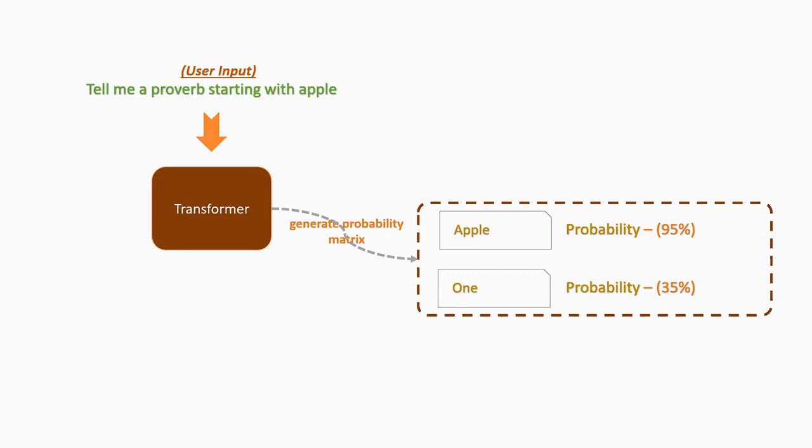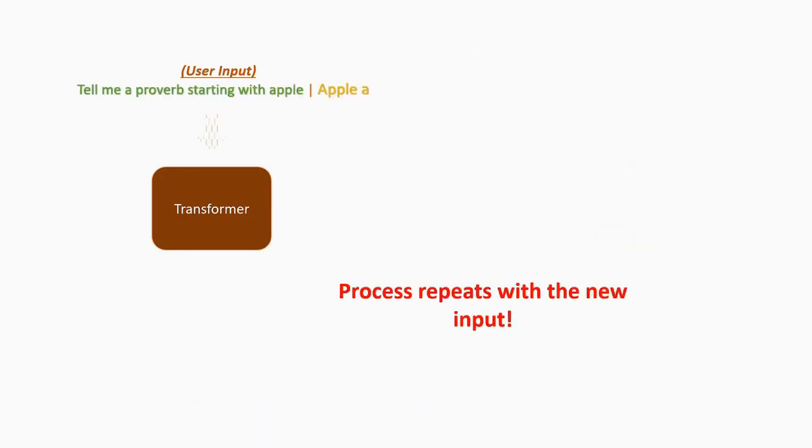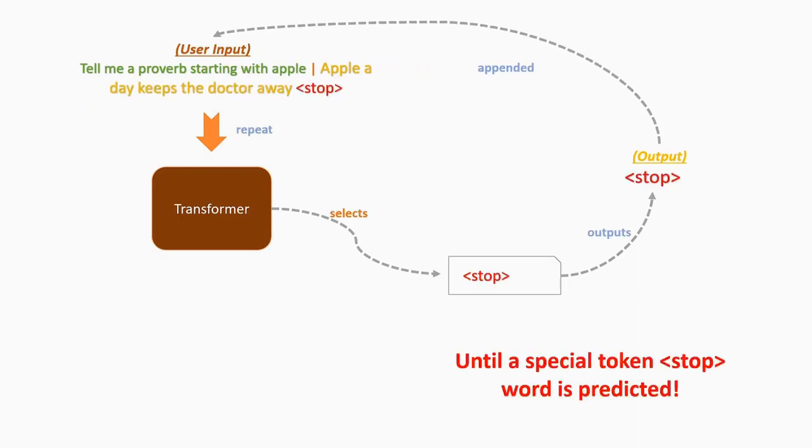GPT uses a neural network called a transformer to start generating words. It generates words by taking the input and finding a set of probable words and choosing the word with the highest probability. Then the new word is appended to the current sentence and the process is repeated until a stop token is predicted.